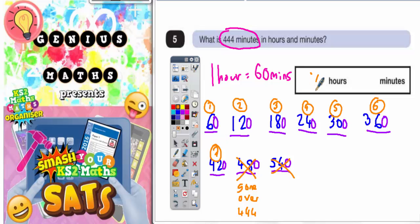So it's definitely 7 hours. And all we need to do now is figure out how many extra minutes there are from 420 up to 444. Well, if we do 444 subtract 420, a lot of you could probably do this in your head. The answer is obviously going to be 24 minutes.